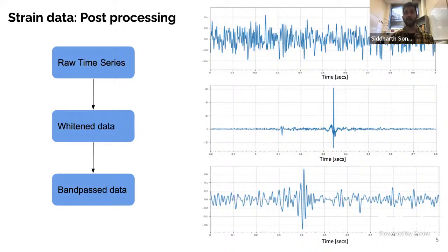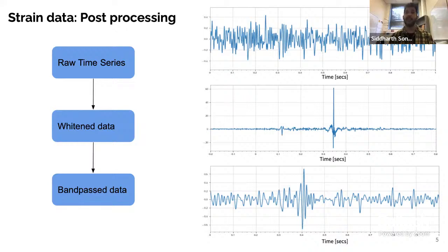There can be multiple reasons to apply these thresholds — maybe because you already expect something within a certain frequency range. After doing all this, as you can see from these plots, some features are much better visible. The first plot shows nothing much going on. The second plot has a big spike in the middle, so maybe there is a glitch. And the third plot looks like a gravitational wave.